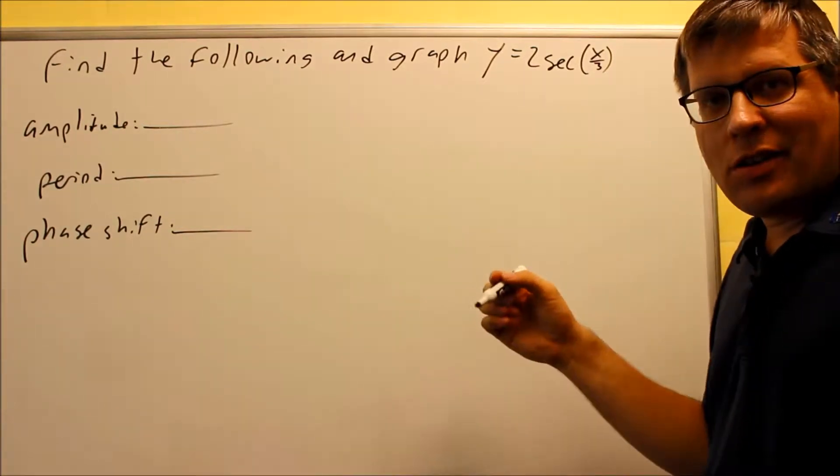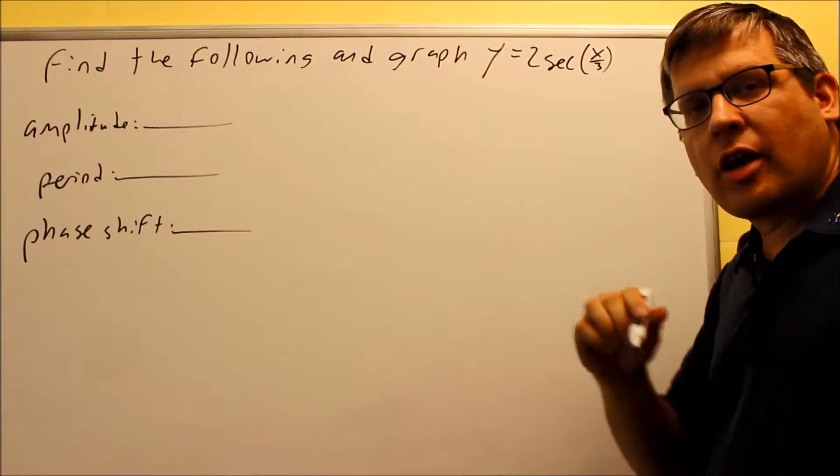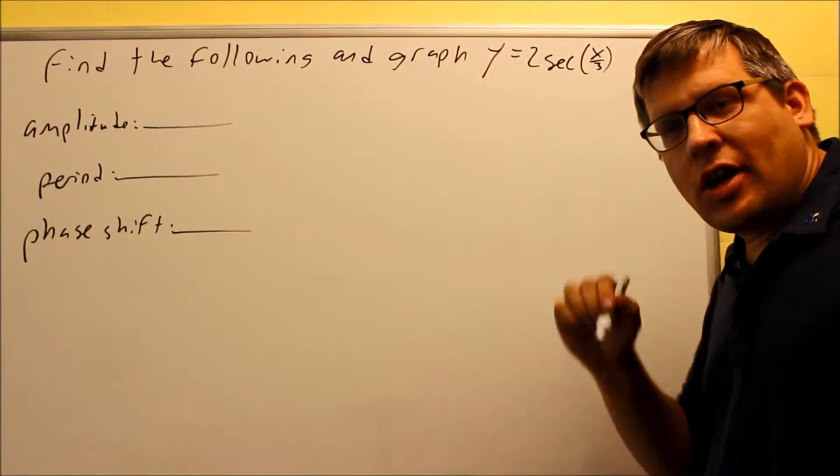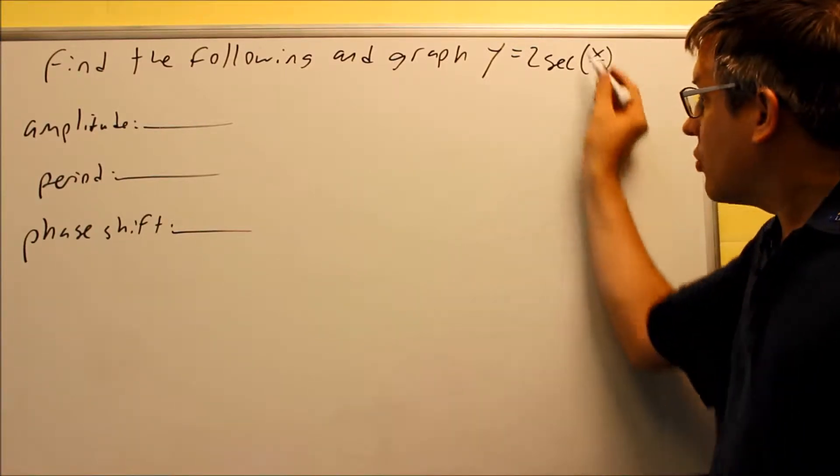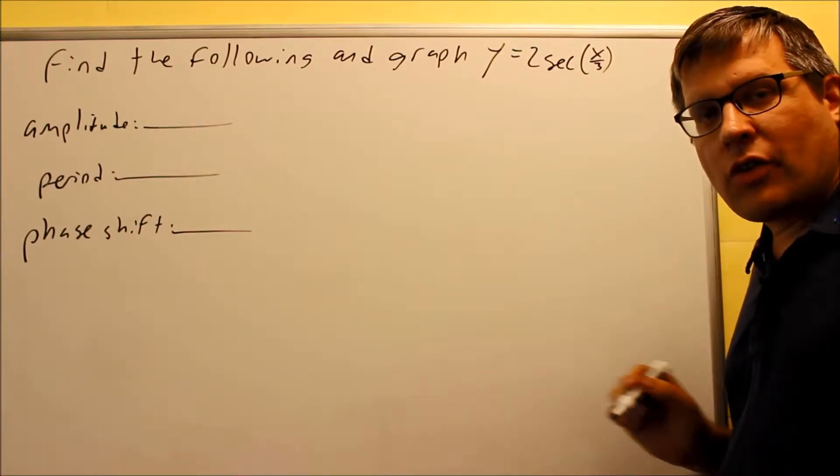Now what I'm going to do is I'm going to pretend that this is actually a cosine graph, and I'm going to draw that one with a dotted line. Then, once I'm done with that, I'll go in and actually draw in the secant graph with the solid line.